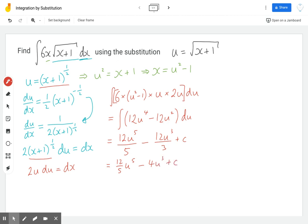But now we need to put our substitution back in. So we've got 12 fifths and the u is x plus 1 to the half, remember. So that is now to the power of 5 take away 4 lots of x plus 1 to the half cubed plus c.